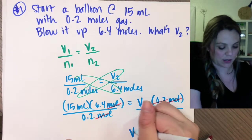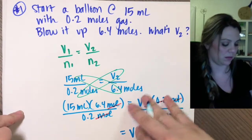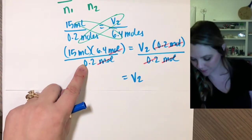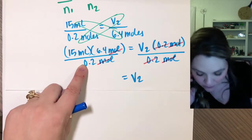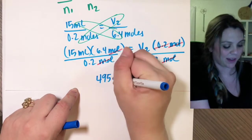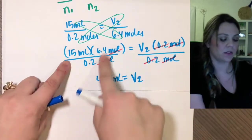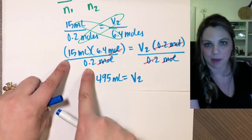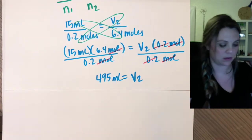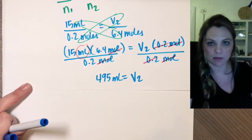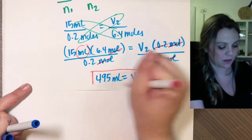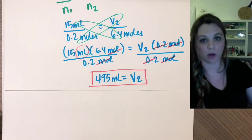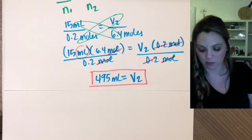And I find that V2 equals a number, 495 mils. Just plug that in your calculator, right? 15 times 6.4 divided by 0.2. And it's in mils because I was there. So that's my new volume. My balloon has blown up from 15 milliliters to 495 milliliters. It's a bigger balloon.